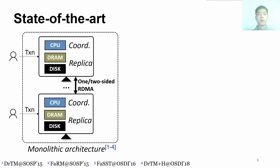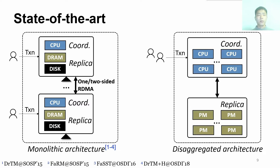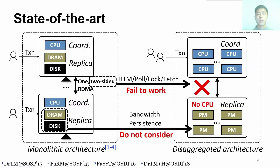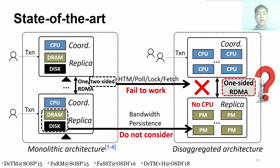Unfortunately, state-of-the-art RDMA-based transaction systems such as FARM and DRTM become inefficient on disaggregated PM due to two reasons. First, they are designed on a monolithic architecture in which each server contains a CPU to run coordinators and memory to store replicas. However, in the disaggregated architecture, the PM pool stores all the replicas but does not contain a CPU to handle transaction requests. Therefore, prior two-sided RDMA-based RPC schemes fail to work due to involving remote CPUs. Second, existing works are designed for DRAM plus SSD, which do not consider the bandwidth and persistency properties of PM. To address this problem, an intuitive solution is to leverage one-sided RDMA to bypass the CPU in the PM pool. However, directly using one-sided RDMA in primary-backup systems incurs high overhead due to three challenges.